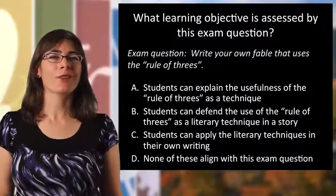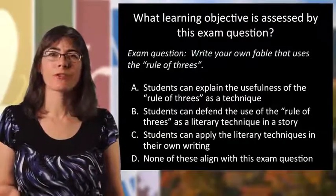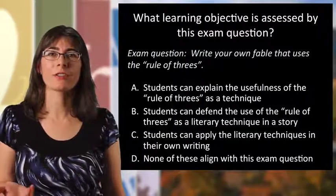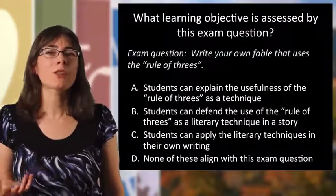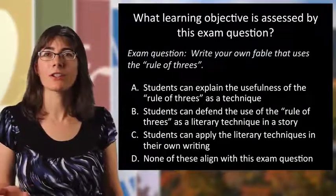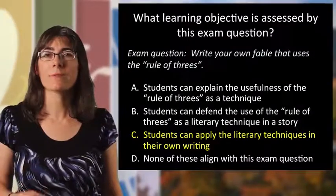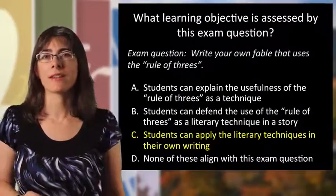So let's look this over. Students certainly do need to explain the usefulness of the rule of threes in order to be able to use it, and they should probably be able to defend its use. But those aren't necessarily that closely aligned with that exam question. I'd say that really C — 'students can apply the literary techniques in their own writing' — is what's being assessed by that exam question.